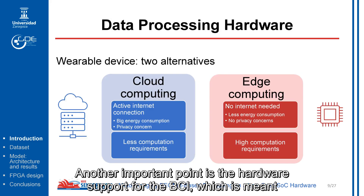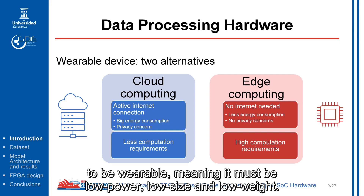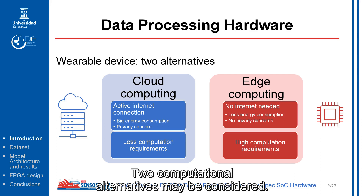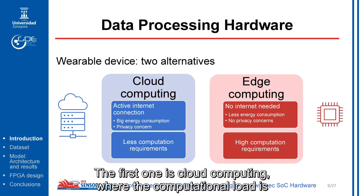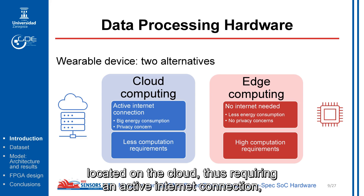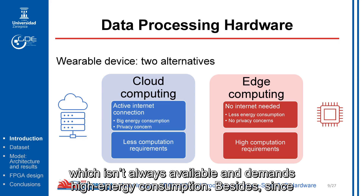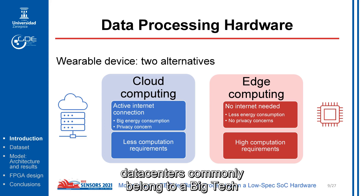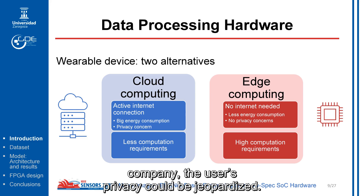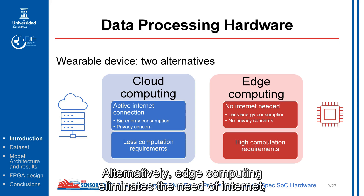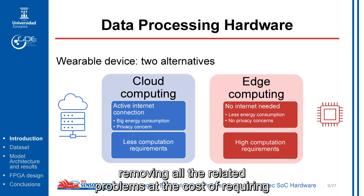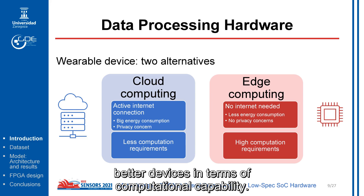Another important point is the hardware support for the BCI, which is meant to be wearable, meaning it must be low power, low size, and low weight. Two computational alternatives might be considered. The first is cloud computing, where the computational load is located on the cloud, requiring an active internet connection which isn't always available and demands high energy consumption. Besides, since servers commonly belong to a big tech company, the user's privacy could be jeopardized. Alternatively, edge computing eliminates the need for internet, removing all related problems at the cost of requiring limited devices in terms of computational capability.